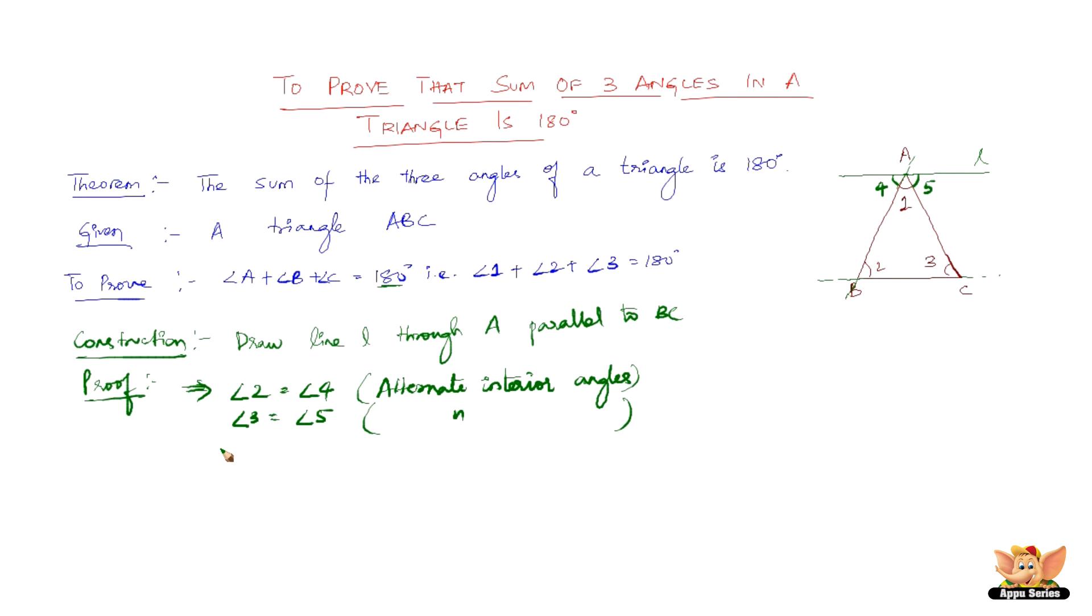Therefore, angle 2 plus angle 3 equals angle 4 plus angle 5. Now let us add angle 1 to both sides. We get angle 1 plus angle 2 plus angle 3 equals angle 1 plus angle 4 plus angle 5.